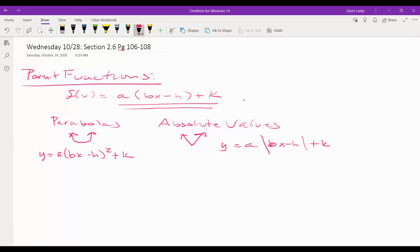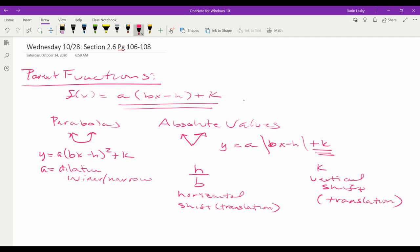Here's the idea: we call a, which is what we used to call steepness or our amplitude, we call it what's called the dilation, so it's either going to make it wider or narrower. And then our h divided by b is going to be our horizontal shift, but they also call it a translation. And then k is our vertical shift or what is known as a translation.